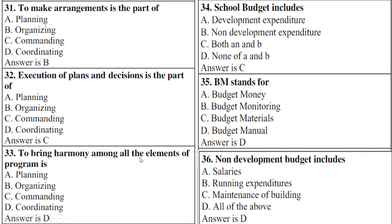To bring harmony among all elements of a program is — right option is D: coordinating. School budget includes — right option is C: both A and B, meaning A: development expenditure and B: non-development expenditure.